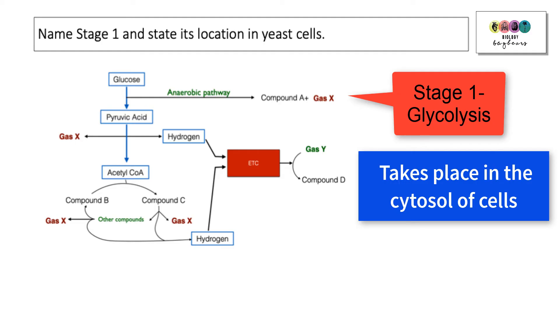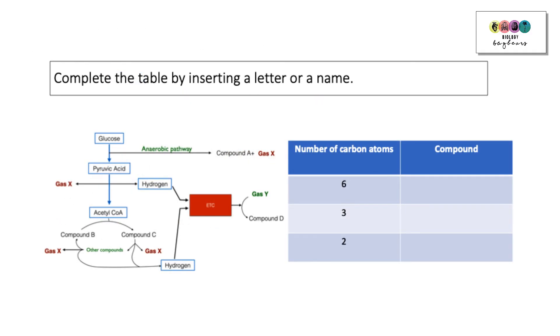Complete the table by inserting a letter or a name. You can see here in the table we have to find compounds or substances that have six carbon atoms, and this is really straightforward. It's just checking, do you know what compounds have six carbon atoms, three carbon atoms, and two? The first one is glucose. It's what we start off with, C6H12O6, so your answer is glucose has six carbon atoms. What do we know then has three carbon atoms? Well, we know it's pyruvate or pyruvic acid. At the end of glycolysis, glucose is split into two molecules of pyruvic acid, each with three carbons. Then we know that after that, pyruvic acid is converted into a two carbon molecule, acetyl-CoA, but you could also answer for this one compound A, which is ethanol, that has two carbons.